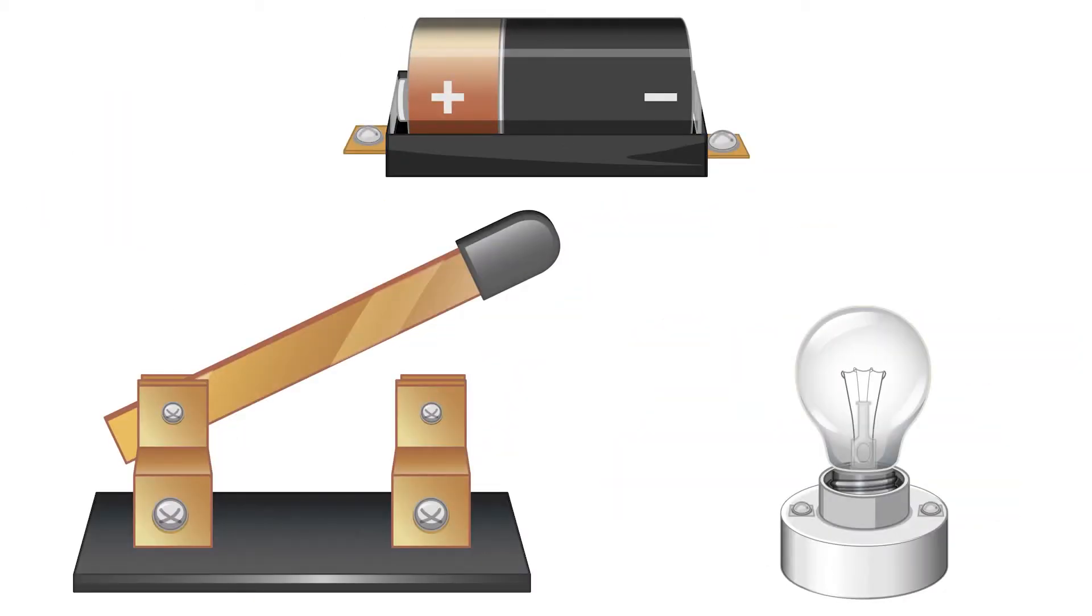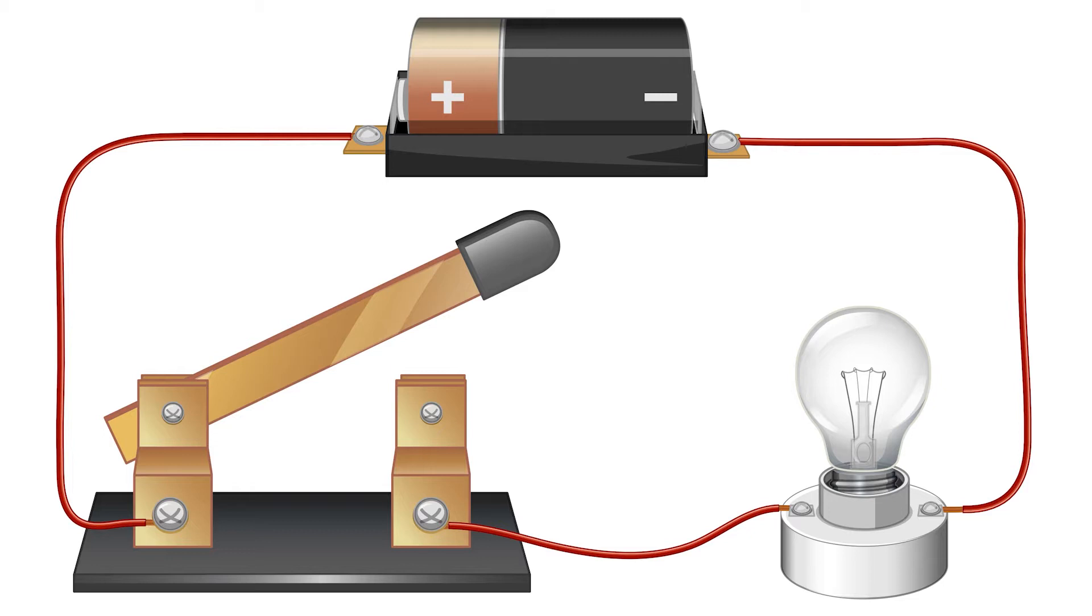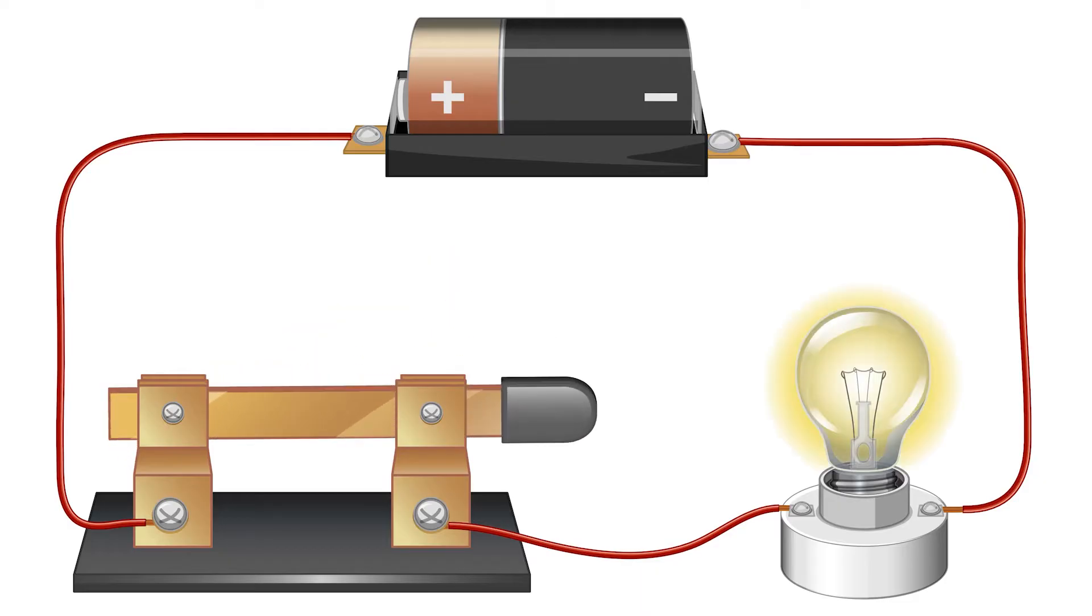One of the most important characteristics of a circuit is that it must be a closed loop. Think of it as a circle with everything connected. Notice that when this is the case, the light bulb turns on.